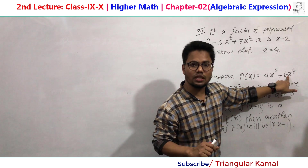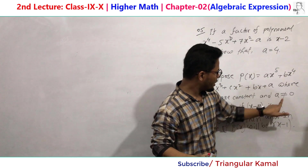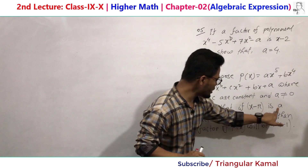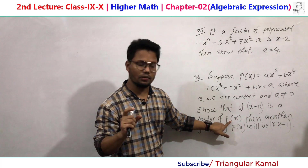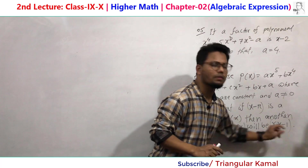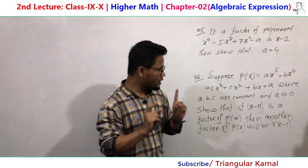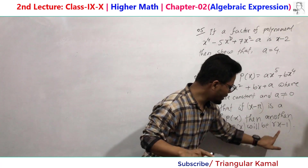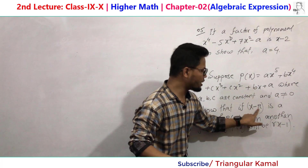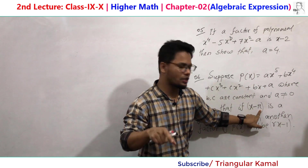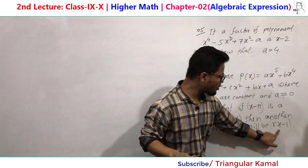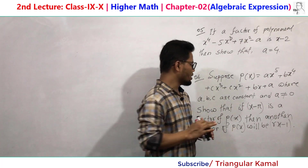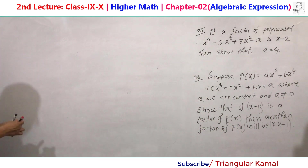So the condition a not equal to zero ensures the number of factors is five. First information: if x minus r is a factor of p(x), then rx minus 1 will also be a factor. This is the conditional mathematics. When x minus r is a factor, rx minus 1 is a dependent factor, while x minus r is an independent factor.